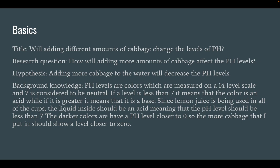Background knowledge: pH levels are colors which are measured on a 14-level scale, and 7 is considered to be neutral. If a level is less than 7, it means the color is an acid, while if it is greater than 7, it means it is a base. Since in this experiment there will be lemon juice inside the solutions, I predict the level should be under 7. The darker colors also have a pH level closer to 0, so the more cabbage I put in should show a level closer to 0, if my hypothesis is correct.